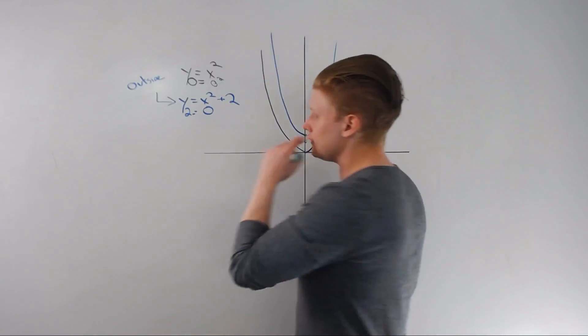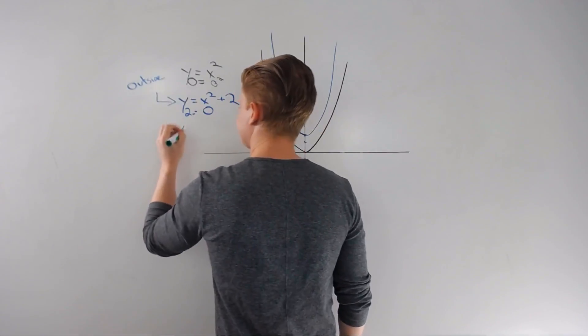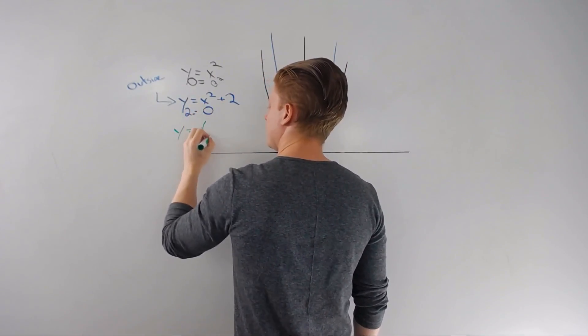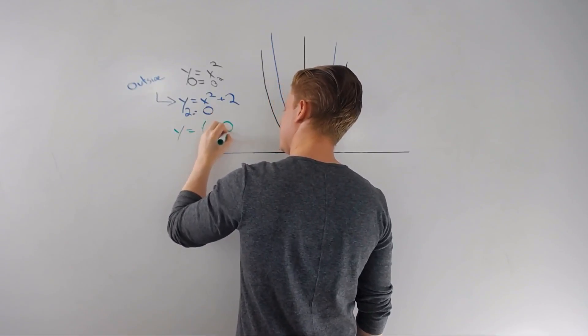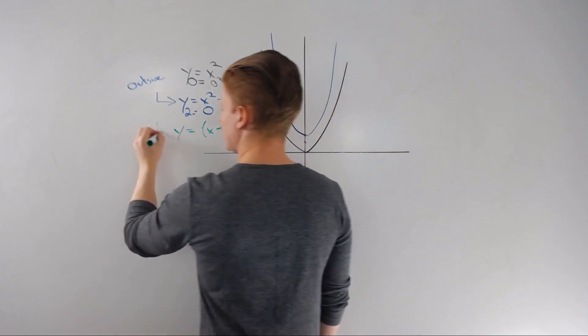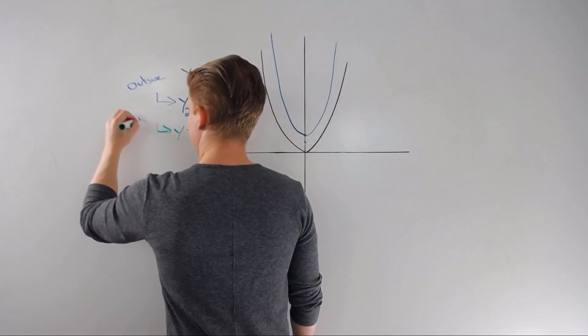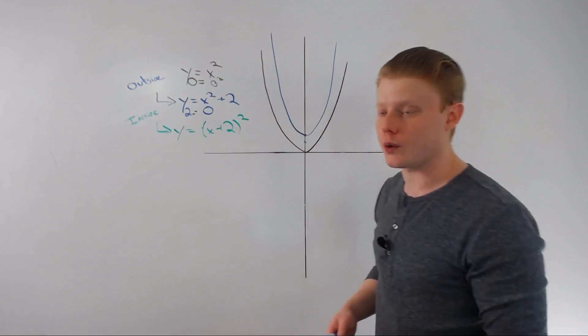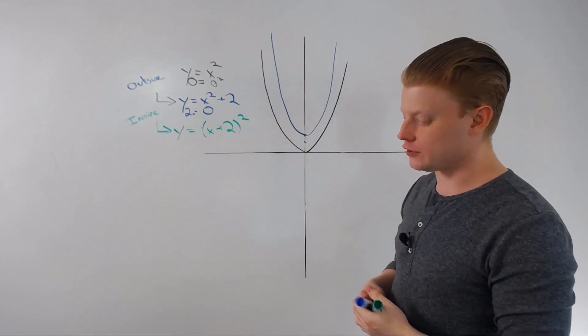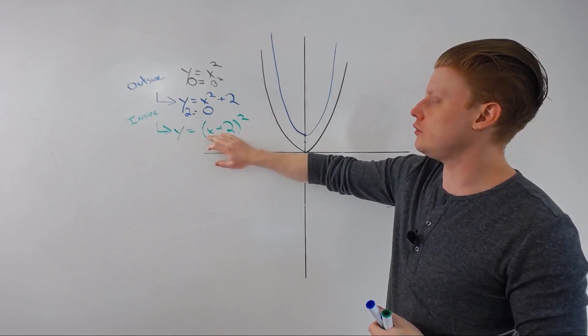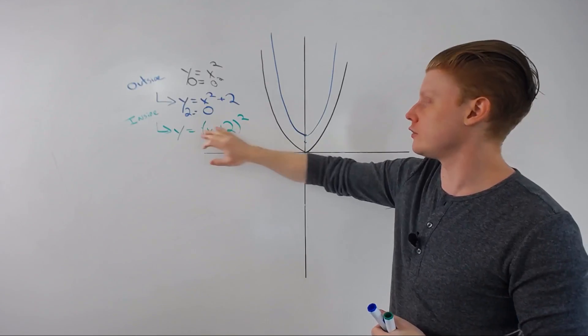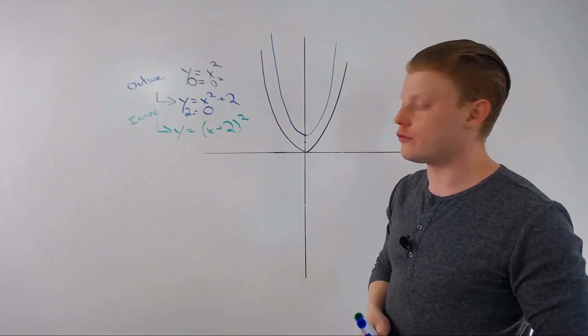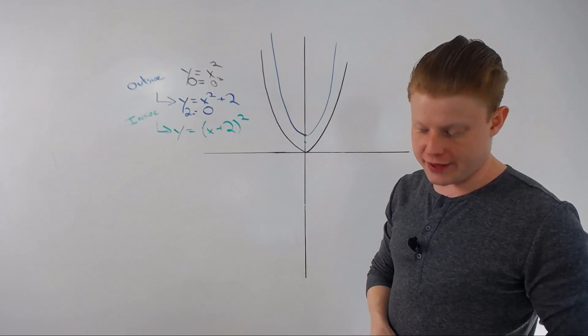Next would be inside the function. Let's say instead of x squared plus two I have y equals parentheses x plus two quantity squared. Now we're inside the function. The same thing that's happening to the x is happening to the two, it's being squared. So when I plug in my zero for x, zero plus two is two, two squared is four.